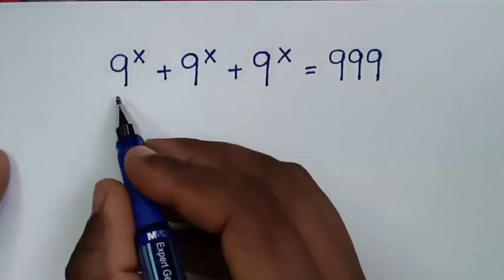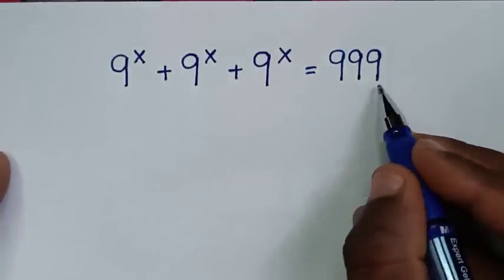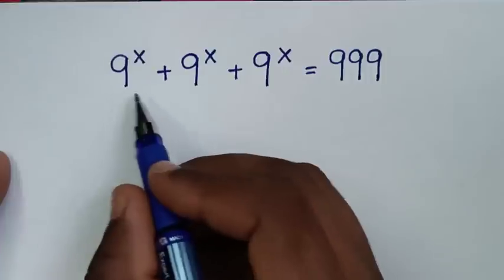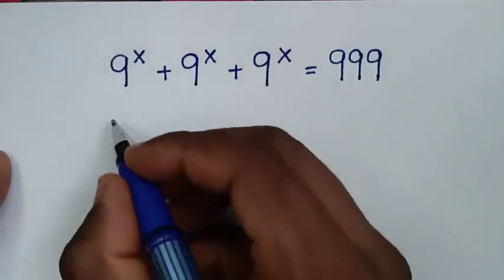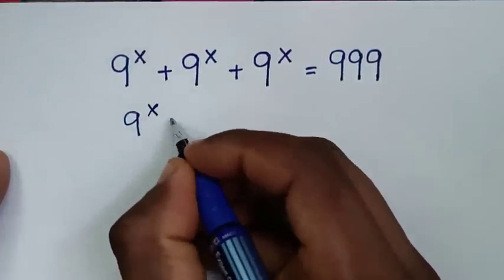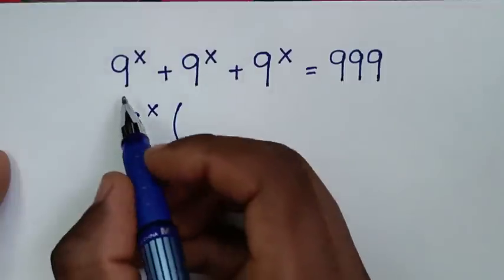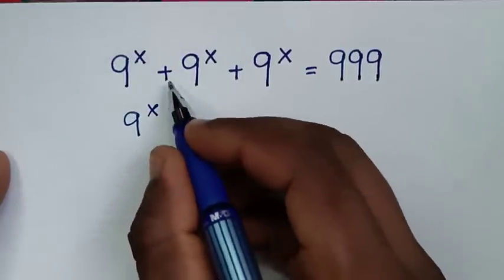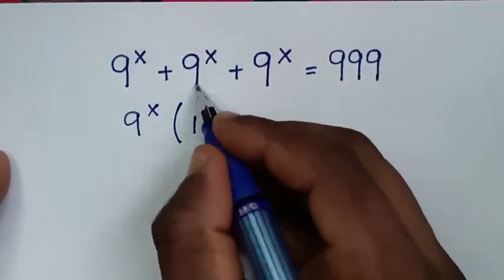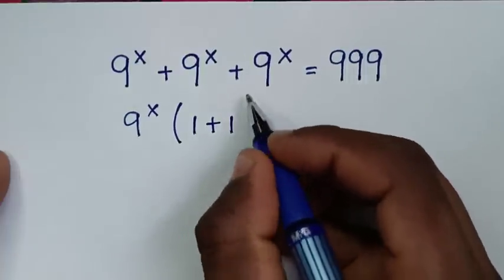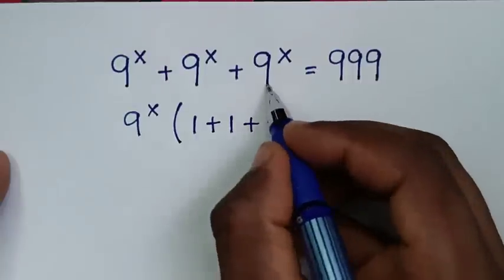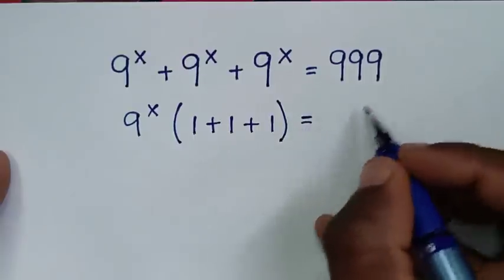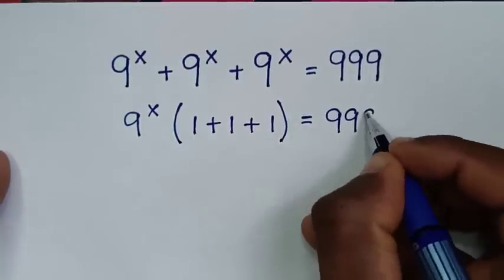To find the value of x from this equation. In the first step, from the left side, 9 power x is common, so we'll take 9 power x out of the bracket. Then 9 power x divided by 9 power x is 1, plus 1, plus 1, inside the bracket, is equal to 999.